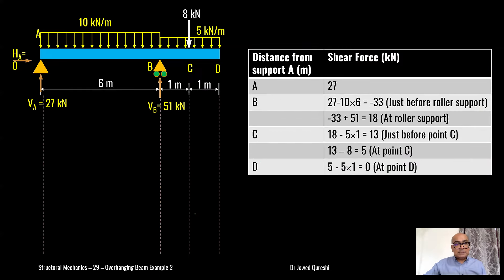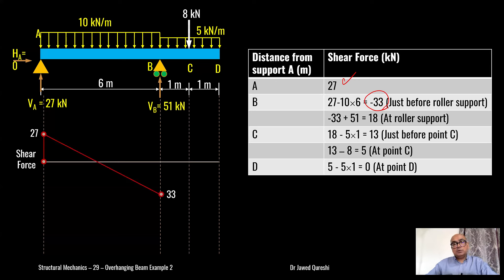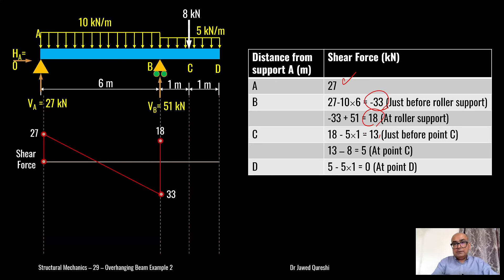I will draw reference lines. The first value is 27 — plot 27 here. The second value is −33. Because I have a UDL, the shear force diagram will always be inclined for UDL — so it goes down to −33. Then I have +18: the reaction causes it to go back up to 18.